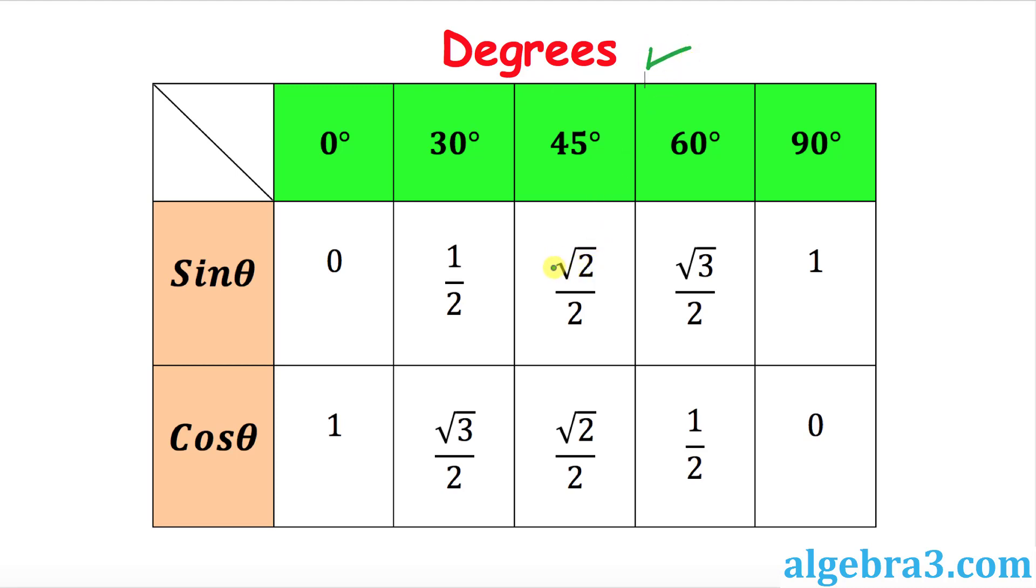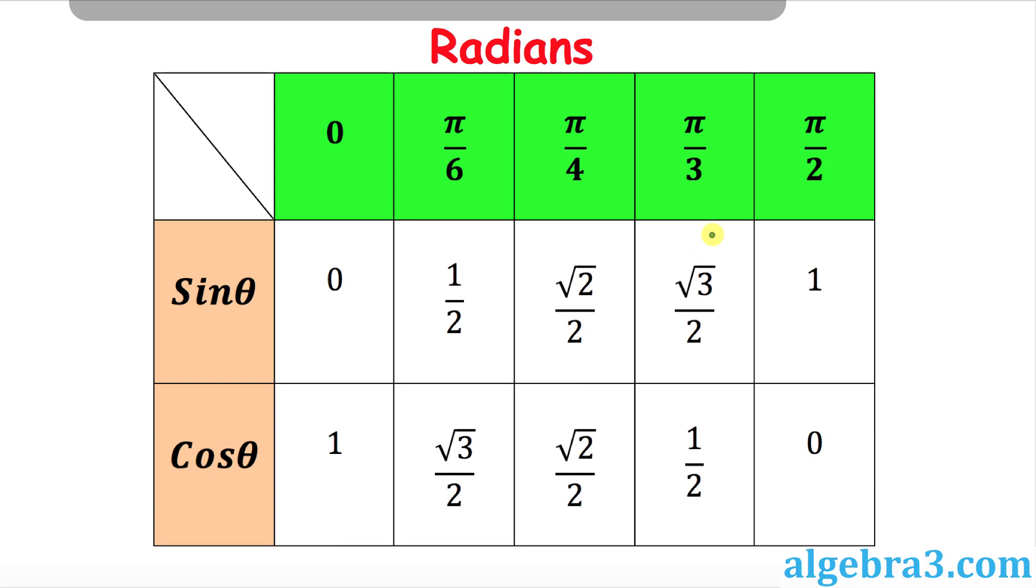Now I'm going to show you for radians as well. This is the trig table for radians: 0 radians, π over 6 radians, π over 4, π over 3, and π over 2 radians—exactly the same way.